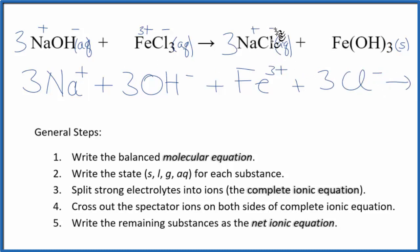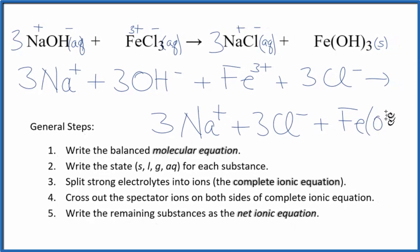In the products, we said this was plus and minus 3 sodium ions and 3 chloride ions. For the iron 3 hydroxide, since it's a solid, we're not going to split that apart. We don't split solids apart in net ionic equations, so that's just Fe(OH)3. And this is the complete ionic equation.